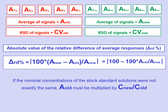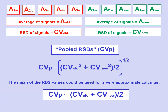In case the nominal concentration of the old standard C-old is not exactly equal to that of the new standard C-new, the mean response of the old standard A-old has to be multiplied by the quotient of the nominal concentrations of the new and the old standard, since it is the new standard that is taken as the reference. In addition, we have to calculate the weighted coefficient of variation CVp by taking the square root of the mean of the squares of the two coefficients of variation CV-old and CV-new. A very approximate value of CVp, valid for the intended purpose, can also be obtained simply as the arithmetic mean of both coefficients of variation: CV-old plus CV-new divided by two.